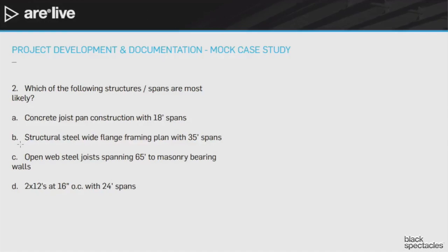Number two. Which of the following structures or spans are the most likely? So let's run through them. A: Concrete joist pan construction with 18-foot spans. B: Structural steel wide flange framing plan with 35-foot spans. C: Open web steel joists spanning 65 feet to masonry bearing walls. D: 2x12s at 16 inches on center with 24-foot spans.